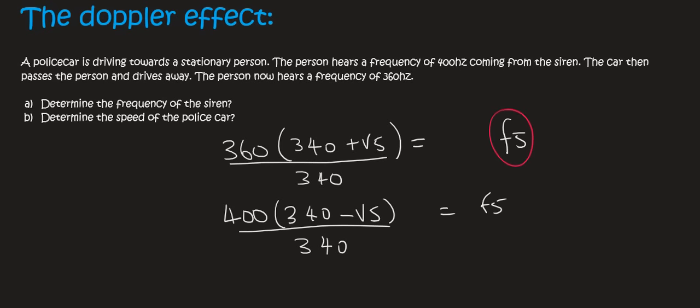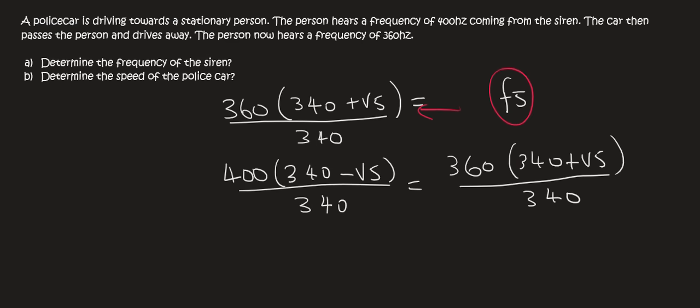Now we've got Fs is equal to this, and Fs is equal to that. So now we can make these two equations equal to each other. And now there's 340 on both sides, so I'm just going to cancel those. We're now going to multiply this in, and so that's 136,000 minus 400 Vs equals 122,400 plus 360 Vs.